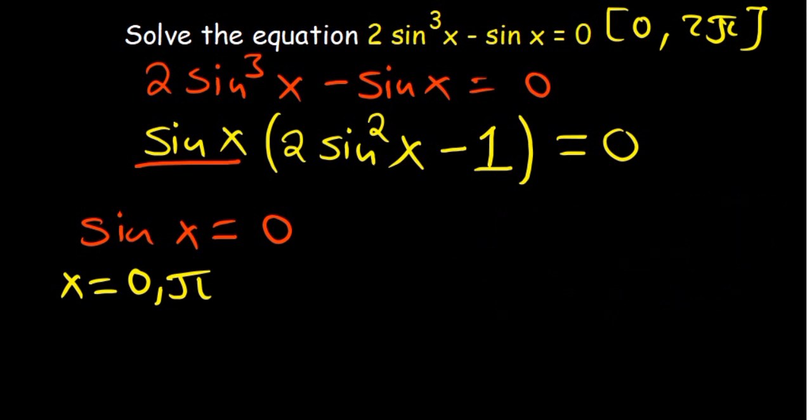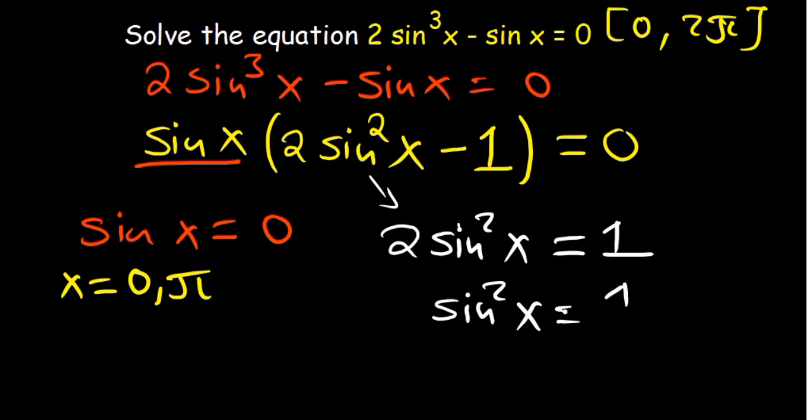Now we can also look at the other part. The other part tells us to say 2sin²x is equal to... So the negative one I can move to the other side, so it becomes a positive. And then I will divide by 2 on both ends, so that we have 1/2 on the other side. Now at that point where we have 1/2, we can find the square root on both ends.